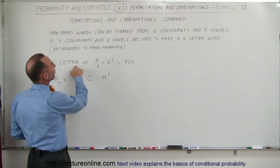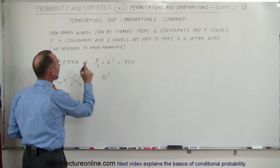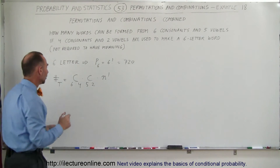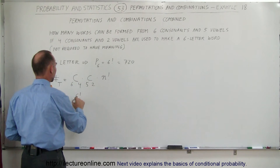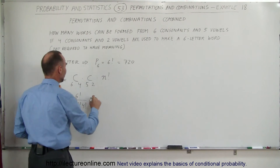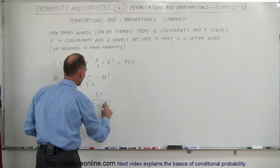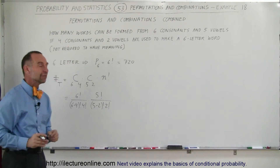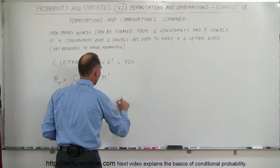In this case, for consonants, we have six consonants and we have to choose four of them. For vowels, we have five vowels and we have to choose two of them, which will increase the possible number of permutations. So that would be equal to six factorial divided by (six minus four) factorial times four factorial, times five factorial divided by (five minus two) factorial times two factorial — giving us the combinations for consonants and vowels — then multiplied times six factorial.